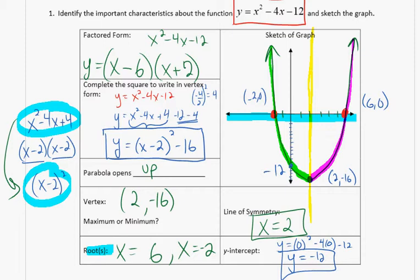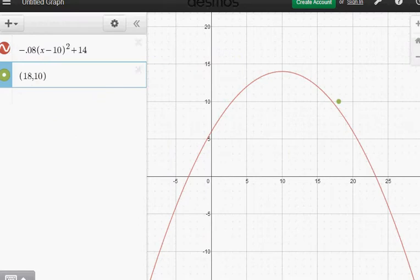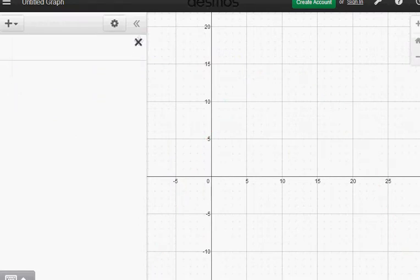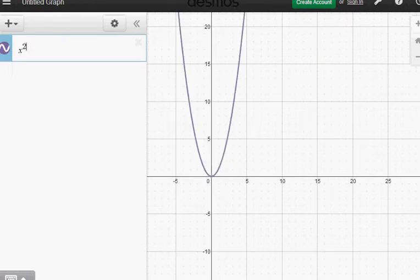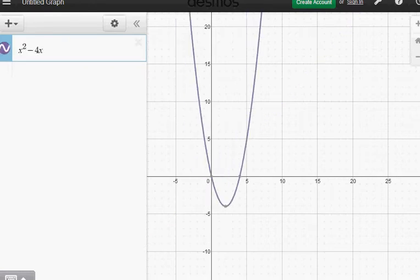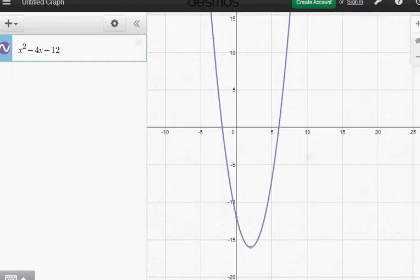So we've got a vertex, we've got a y-intercept, we've got our roots. Do we think this works? Can we check it on Desmos? Let's check it on Desmos. So we've got x squared, what was it? Minus 4x minus 12. All right. Does it look like our vertex was correct? Let's check it. 2, negative 16. Is that what we had? Y-intercept. Zero, negative 12. Is that what we had?